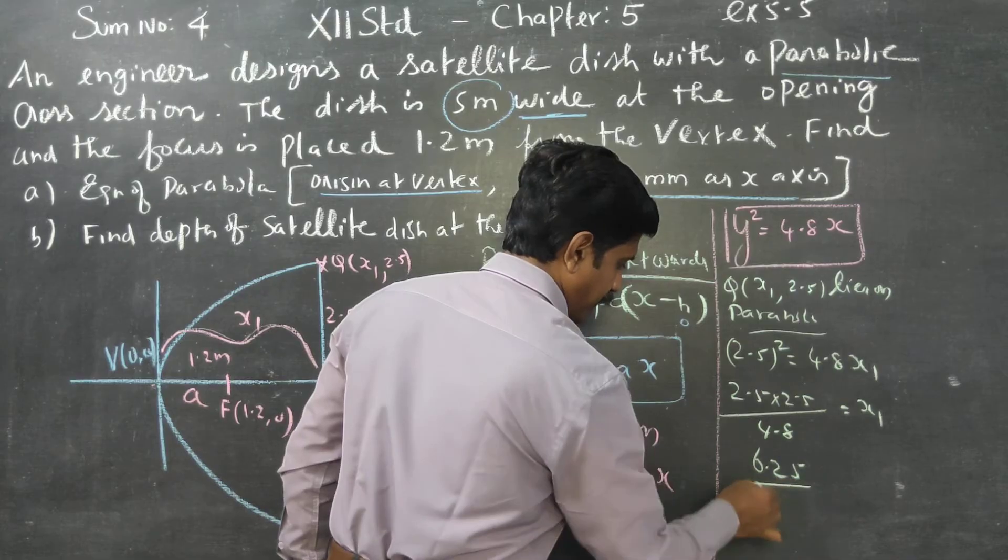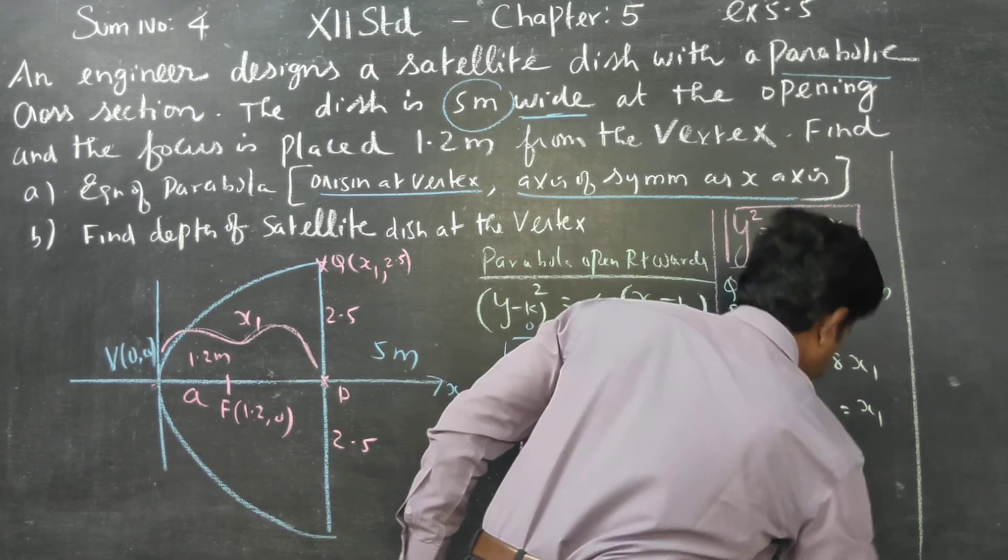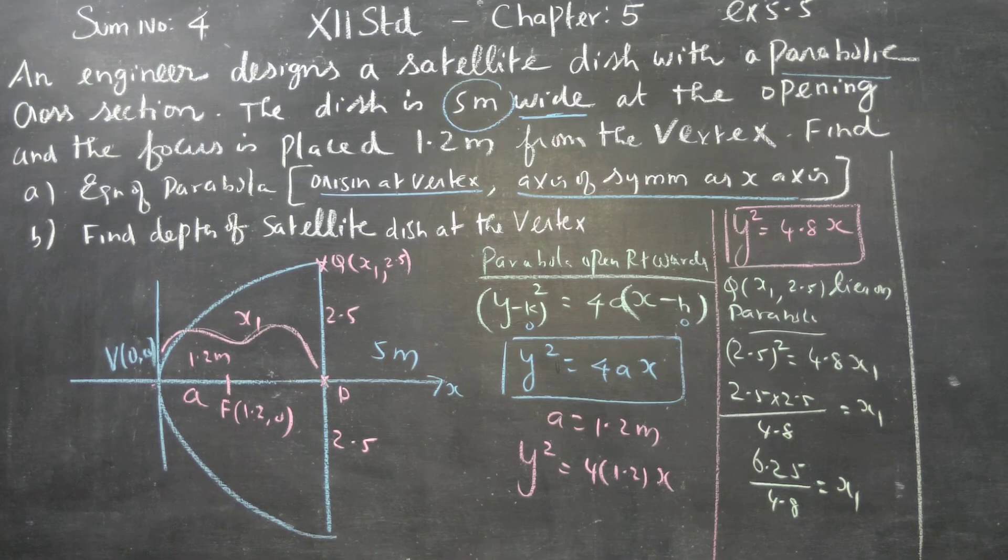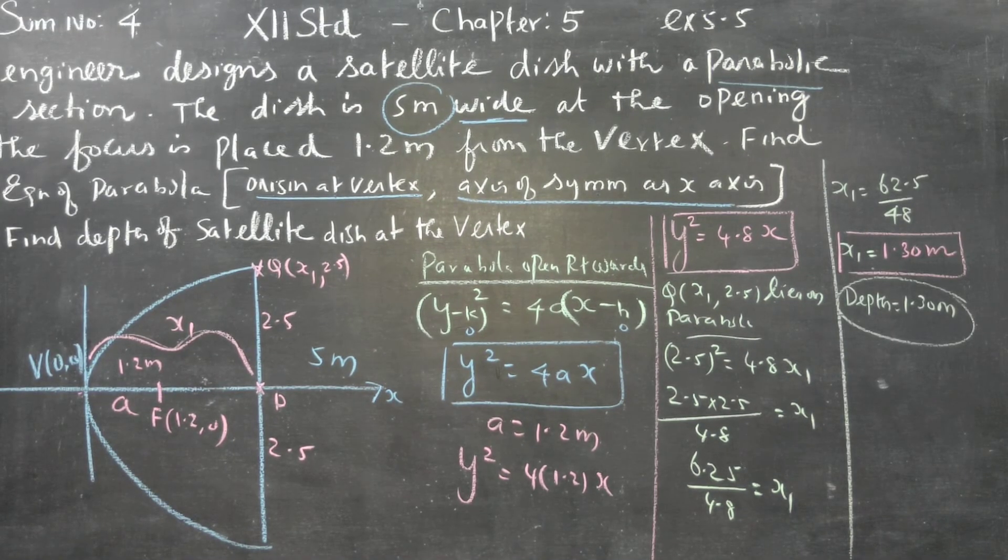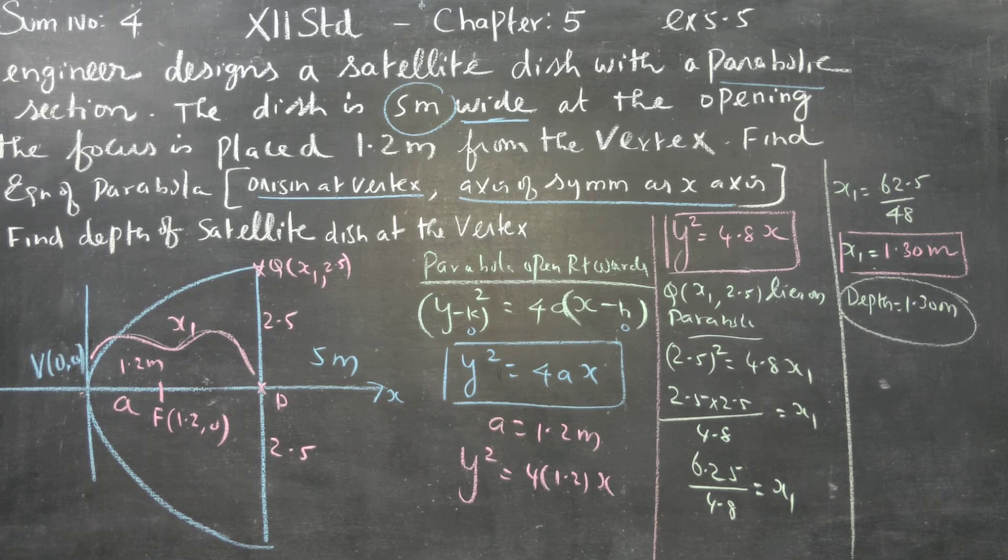6.25 by 4.8 is equal to x1. If you mentally calculate, 62.5 by 48. If they divide, 1.30. You can round it off to 1.30 meters.